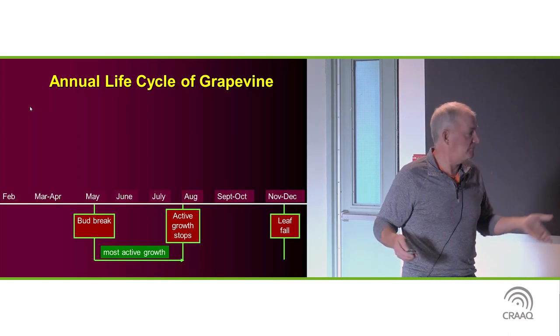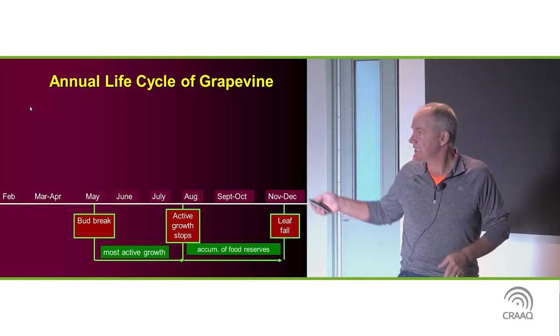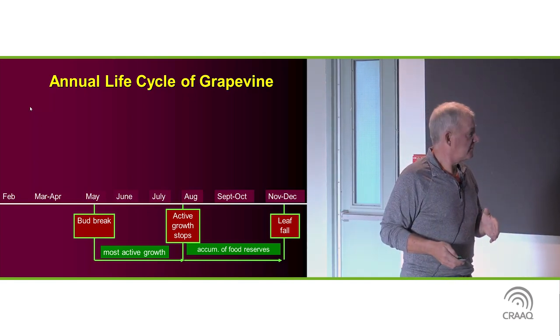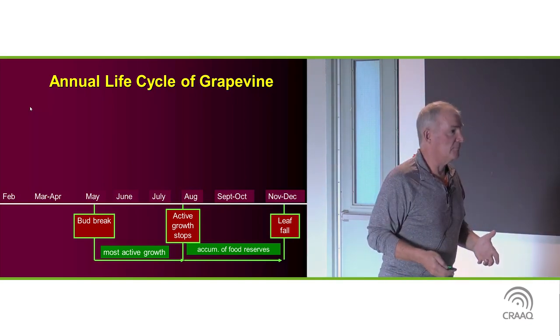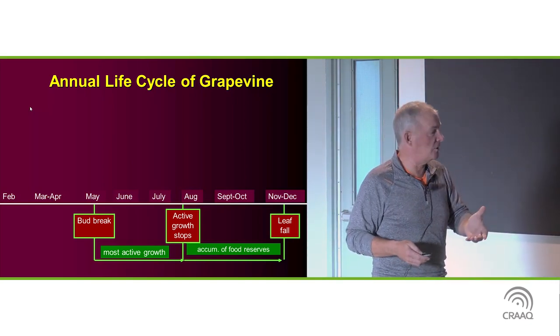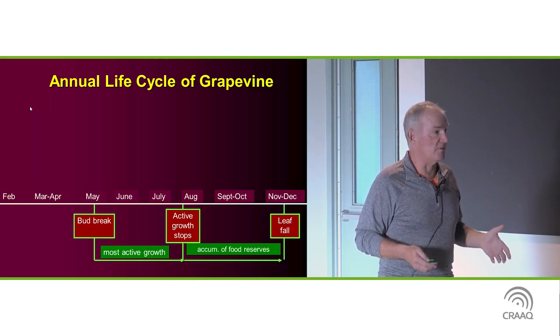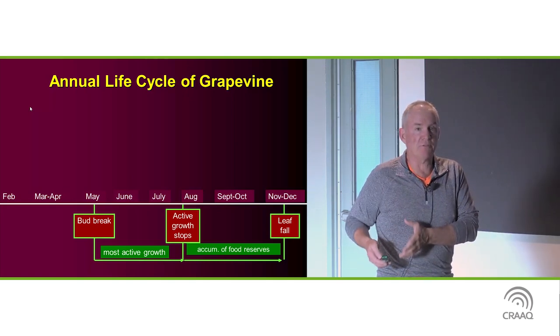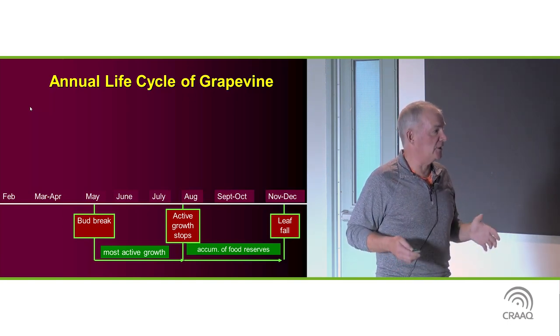Leaf fall when frost occurs. From that point, basically when active growth stops, the plant is storing energy for the following year. But it also, and this will lead into Jim's talk today about winter hardiness and cold survival, it has to accumulate enough reserves to protect the buds through the winter and grow the following year.